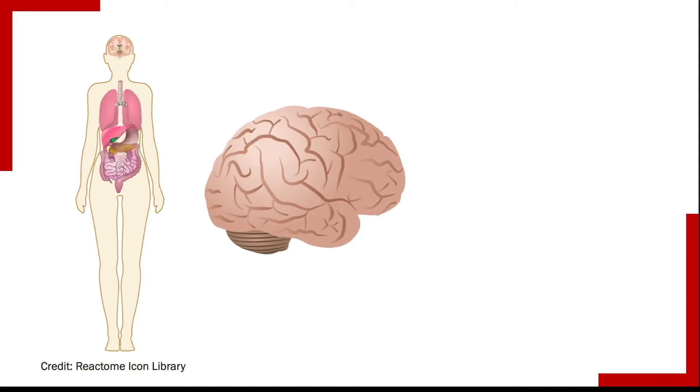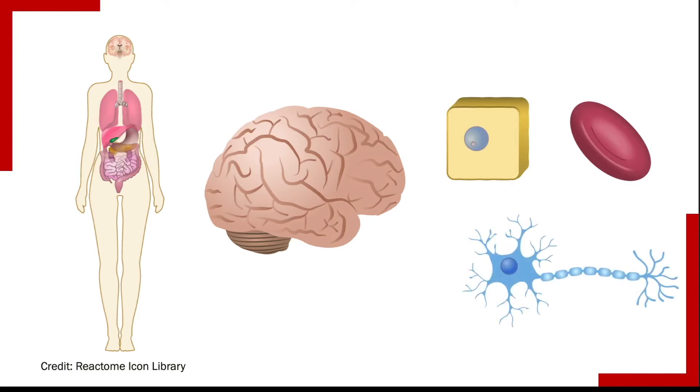Cells come in all different types and the types can have very different shapes. Skin cells look very different from red blood cells and both look very different from brain cells which we call neurons.